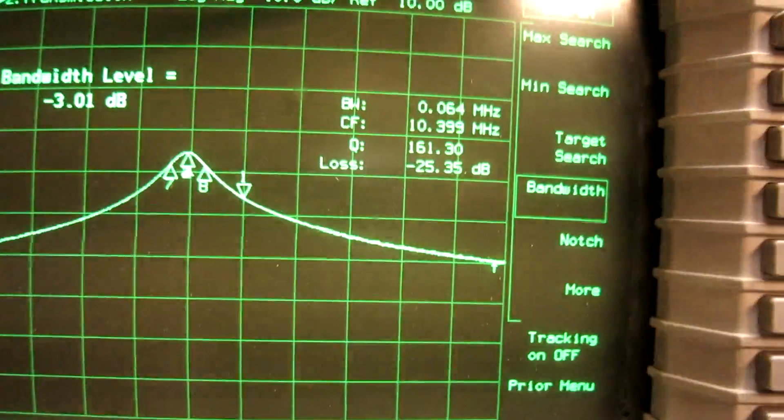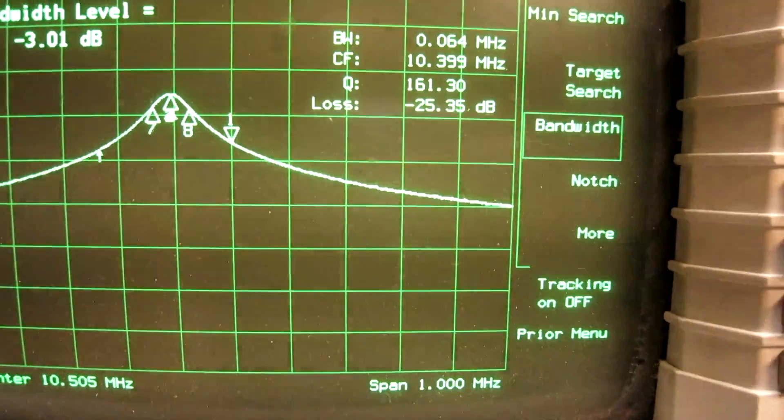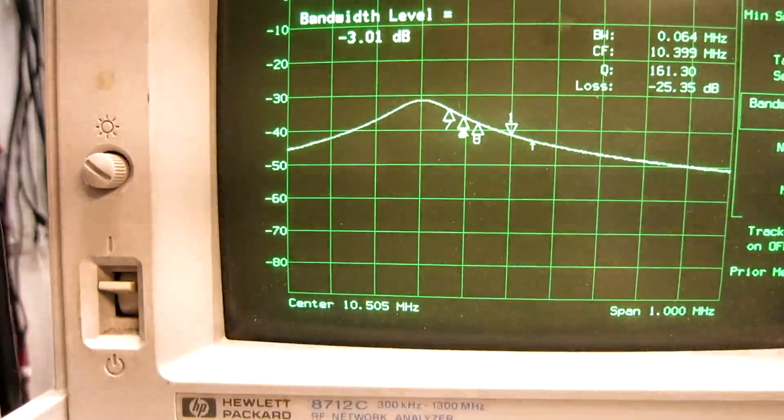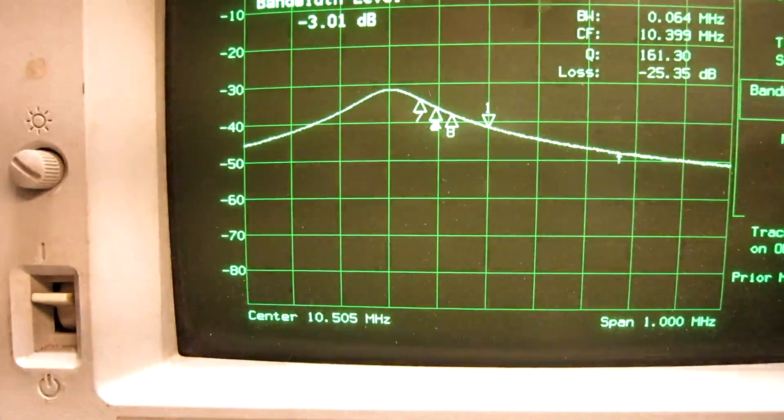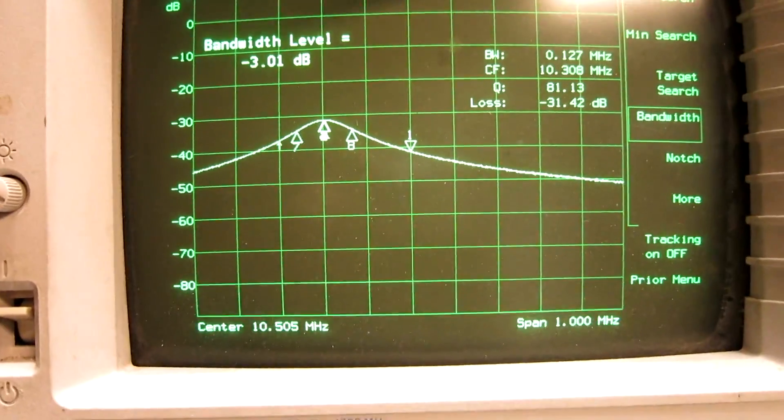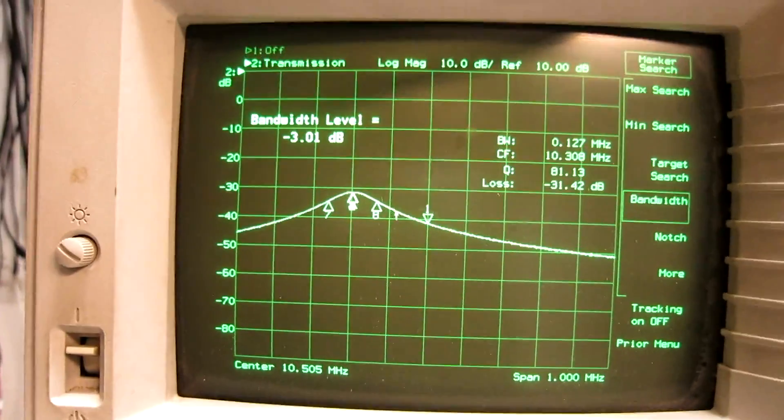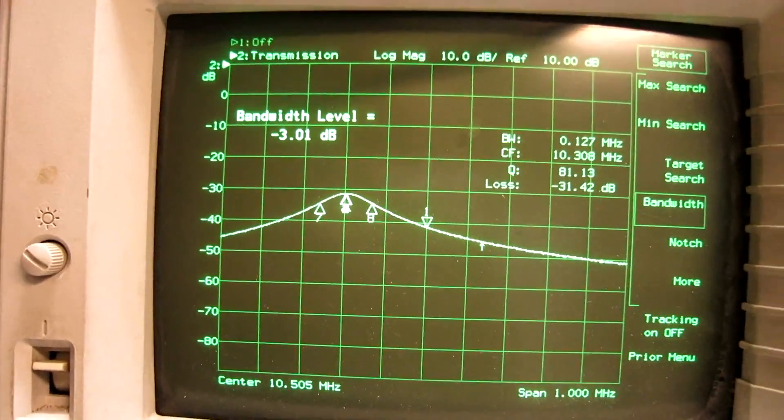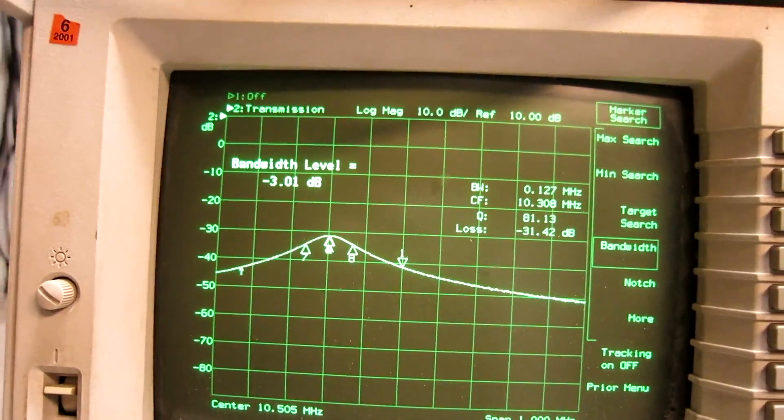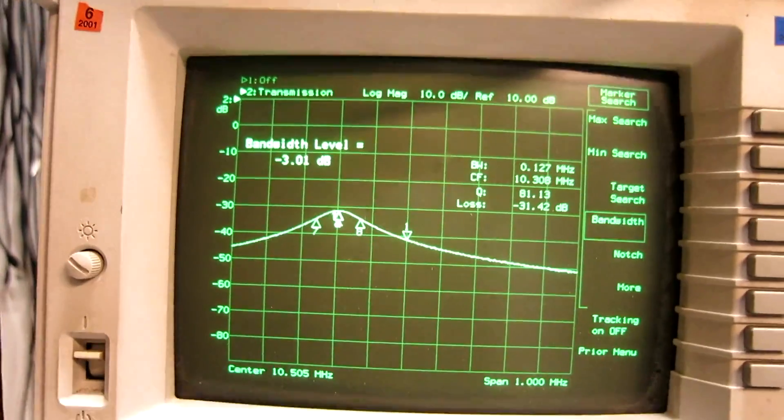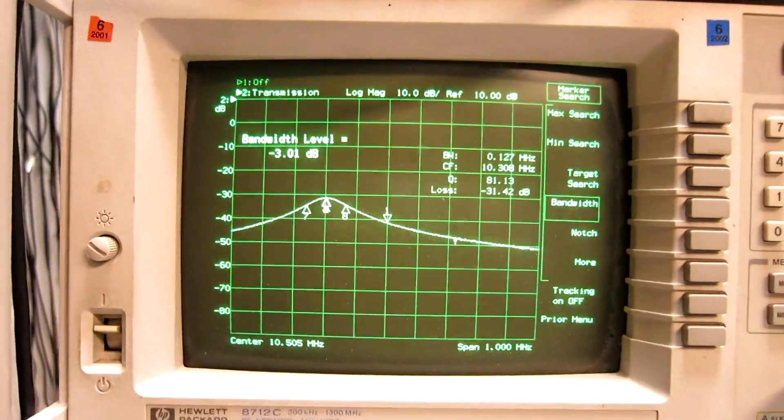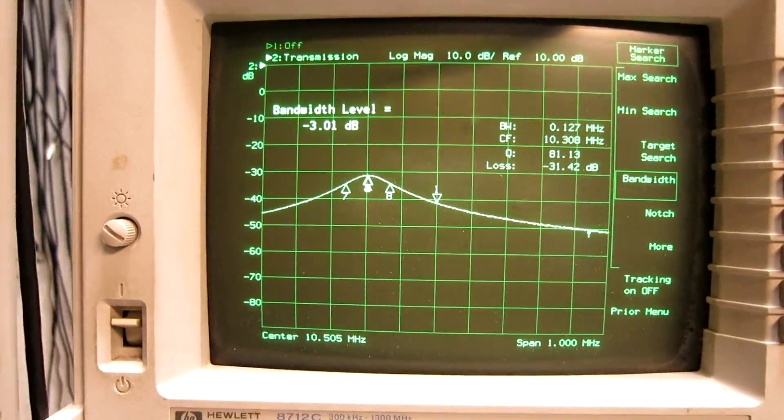Some more turns with a slightly thinner wire, that gives me a Q of 161 and 25.3 decibels loss. And now I added 330 kilo ohms in parallel with the coil. And Q is now half, and loss has increased from 25 to 31. This means the resistance of the resonator LC is the same as this added resistor of 330 k. So I can use this coil.